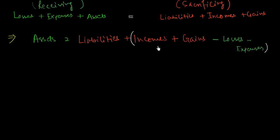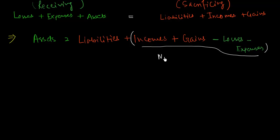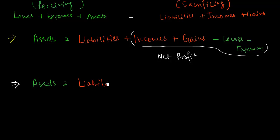Let us concentrate on this part and group it in parentheses. We are adding up all the incomes and gains and subtracting all the losses and expenses. This grouped portion can be called net profit. So the equation can be rewritten as: Assets = Liabilities + Net Profit.